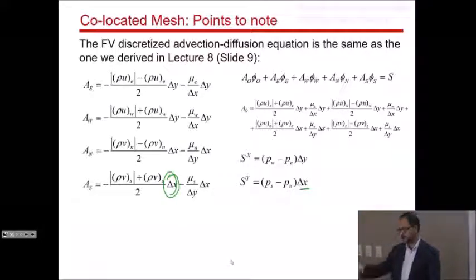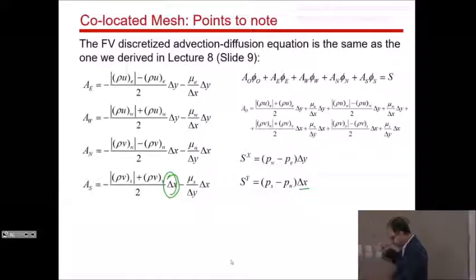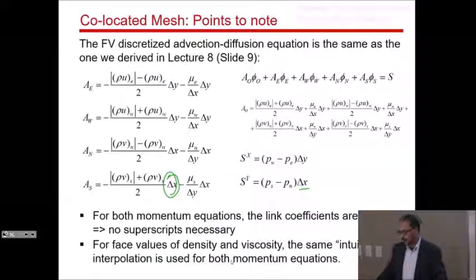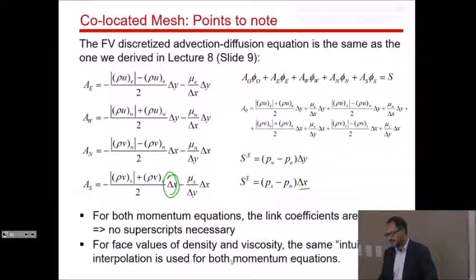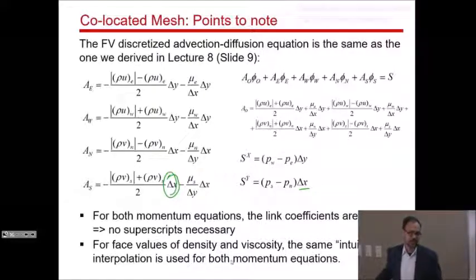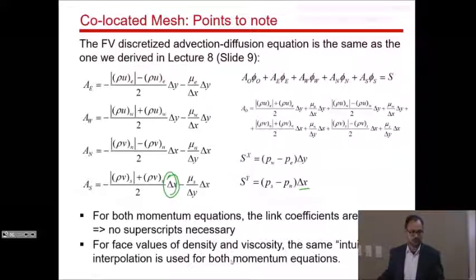For both momentum equations, the link coefficients are the same, so no superscripts X and Y are necessary. The interpolation of variables will be identical for X and Y momentum because it's a co-located mesh. Face values of density and viscosity use standard two-point distance-weighted interpolation: north face equals (N + 0)/2, south face equals (S + 0)/2, and so on.